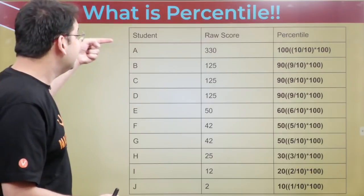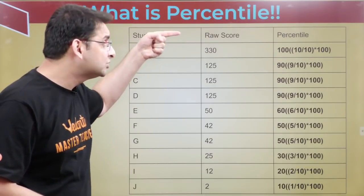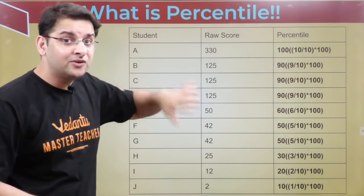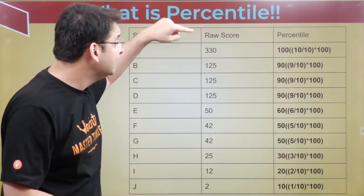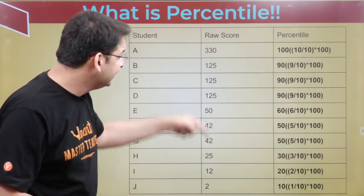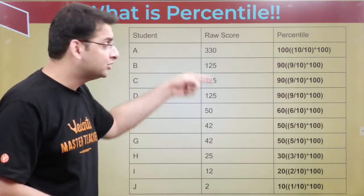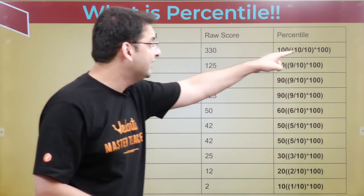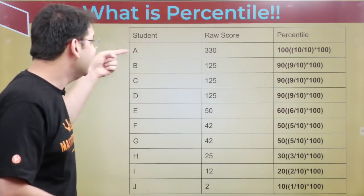Now the percentile of A: since he scored the highest, the number of students with score less than or equal to 330 is 10. So it's 10 out of 10 into 100 — A's percentile is 100.